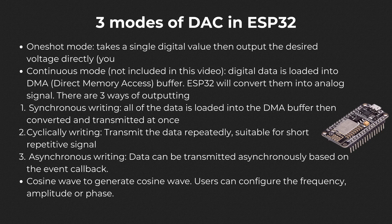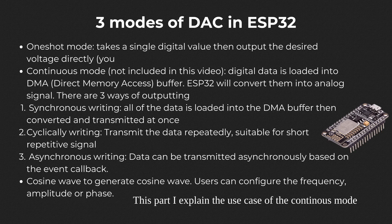The first is direct voltage output, or one-shot mode, which is self-explanatory. You can output even in an ISR or interrupt handler. The second is continuous mode, where the ESP32 outputs analog values using DMA. The third is cosine wave mode to generate a cosine wave — you can configure the frequency, amplitude, or phase. This video only illustrates the basics of DAC, so I will not delve into continuous mode, which is normally used for data transmission. For audio-related projects, I also recommend looking at I2S, the inter-IC sound peripheral of the ESP32. For transmitting audio data, you can use synchronous writing, which loads all data into a DMA buffer before transmitting, or asynchronous writing, which transmits data based on event callbacks. If you are building a wave generator, use the cyclical writing mode, which converts data in the DMA buffer repeatedly.